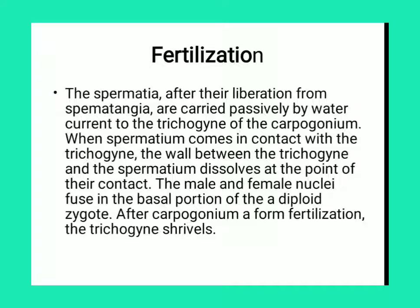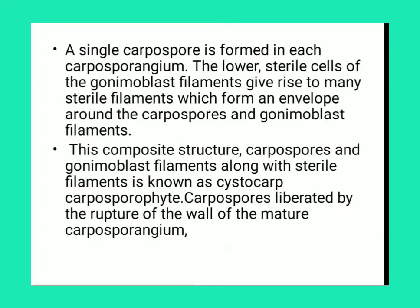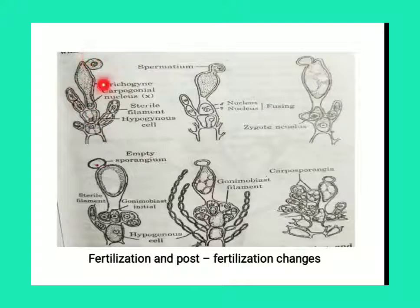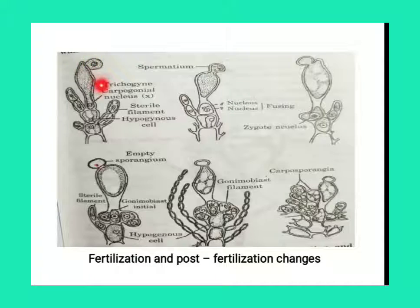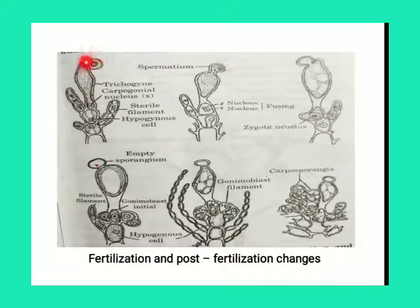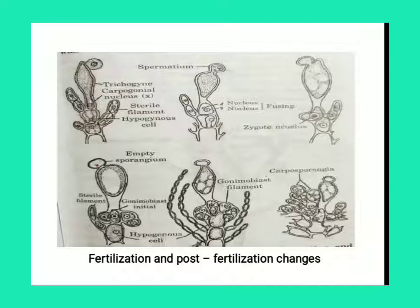the wall between the trichogyne and the spermatangium dissolves at the point of contact, and the male and female nuclei fuse at the basal portion forming the diploid zygote. After fertilization, the trichogyne withers. You can see in this figure the structure of carpogonium and the spermatia. The spermatia are liberated from the spermatangium, attached to the trichogyne, and the trichogyne-spermatia wall dissolves. The female nuclei fuse with the male nuclei and they are converted into the zygote — this process is known as fertilization.